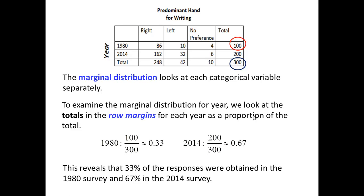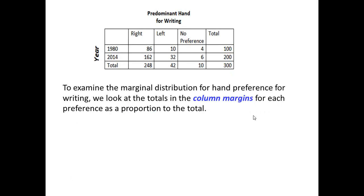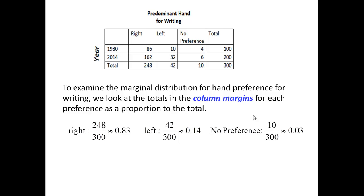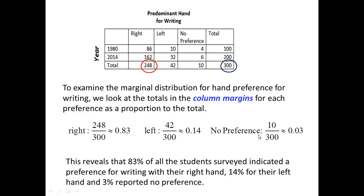This reveals that 33% of the responses were obtained in the 1980 survey and 67% in the 2014 survey. To examine the marginal distribution for hand preference for writing, we look at the totals in the column margins for each preference as a proportion of the total. For the right hand, we have 248 out of 300, or 0.83. For the left hand, we have 42 out of 300, and a corresponding proportion for no preference. Overall, 83% of all students surveyed indicated a preference for writing with their right hand, 14% for their left hand, and 3% reported no preference.